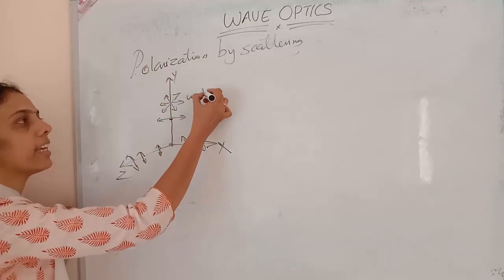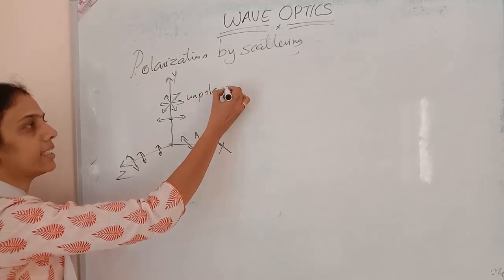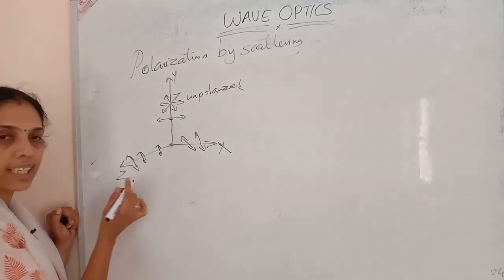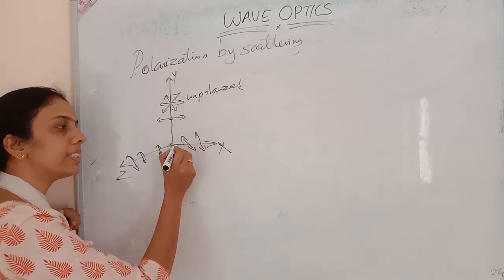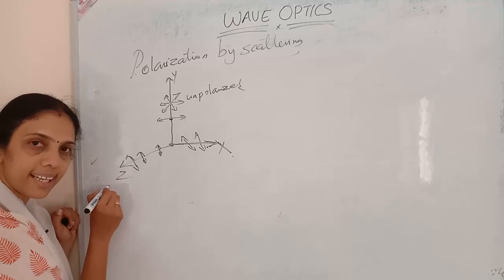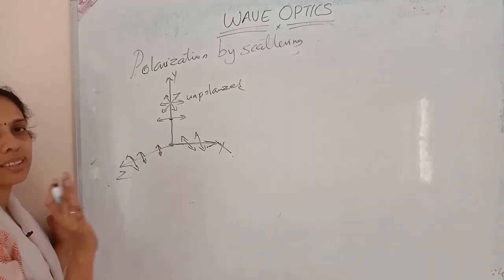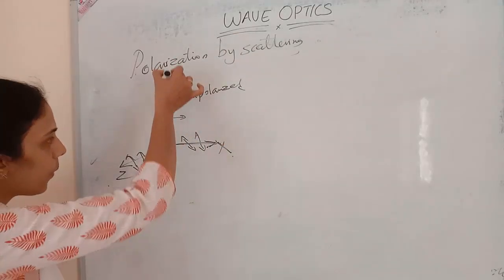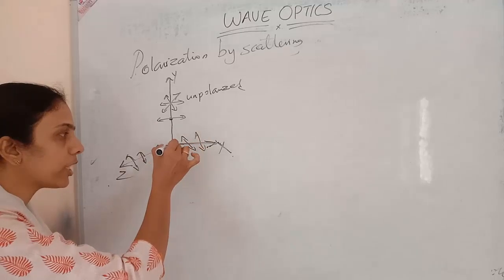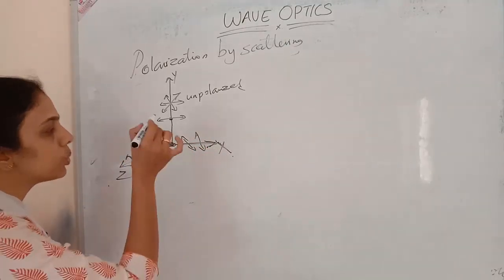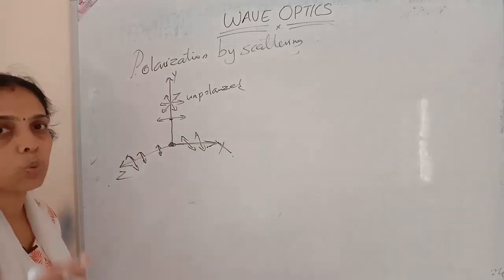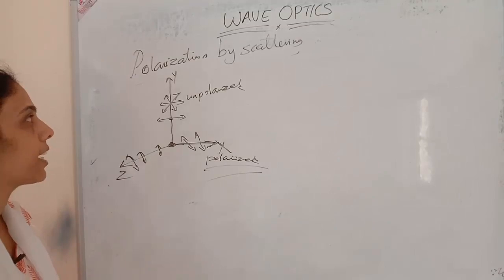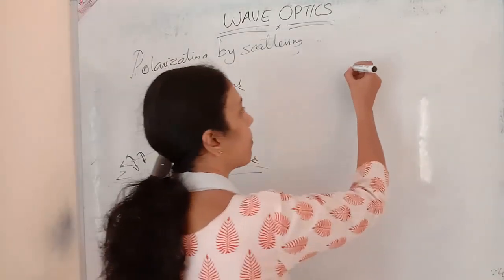Unpolarized light is incident along the y-axis on a scattering element located in the x-z plane. The light scattered along the x-axis and z-axis will be polarized light; all other scattered directions will be unpolarized or only partially polarized. This is polarization by scattering.